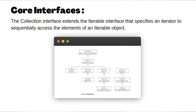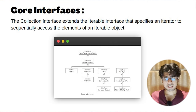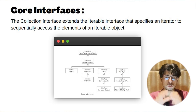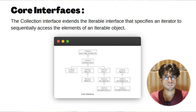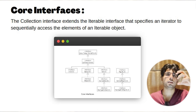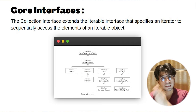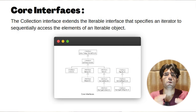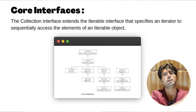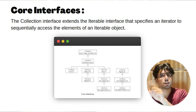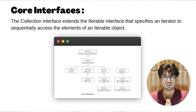In Java, an interface can extend another interface, which is very common. When a child interface extends a parent interface, all the methods of the parent interface are available in the child interface — plus the child adds more methods. So when a class implements the child interface, it must implement both the parent interface's methods and the child interface's methods.